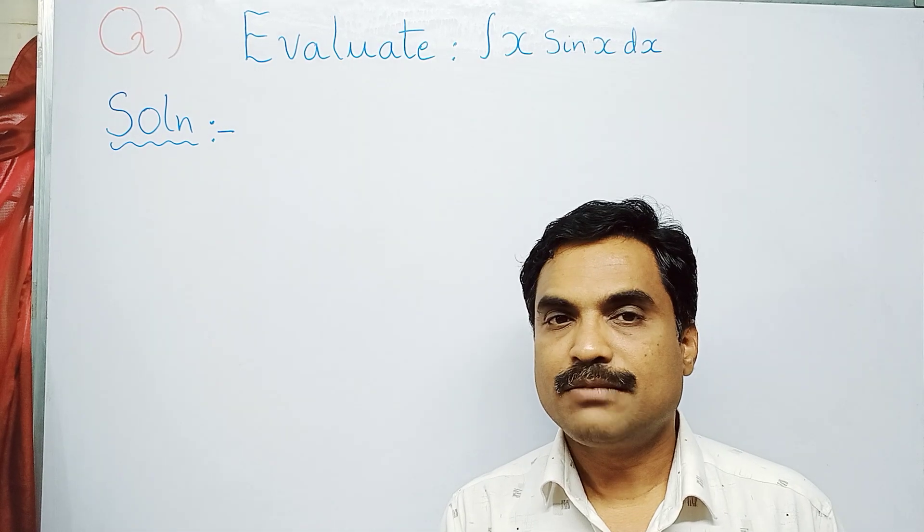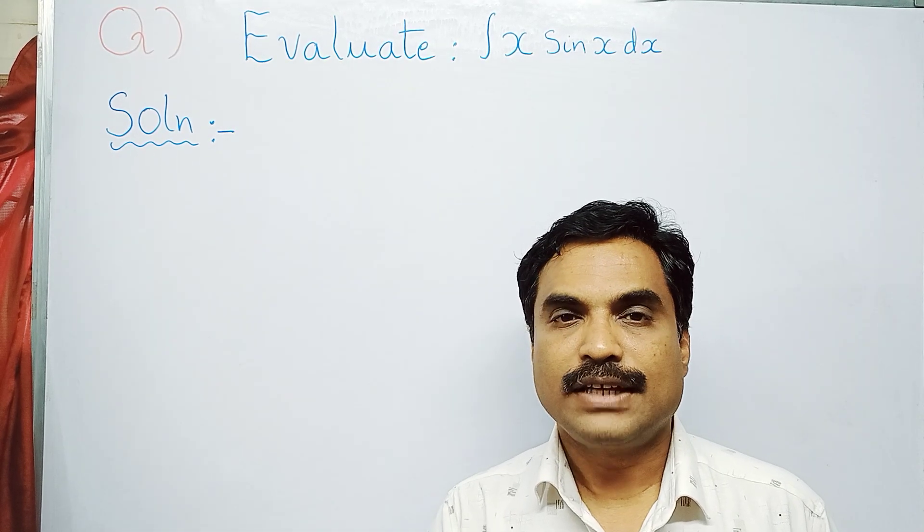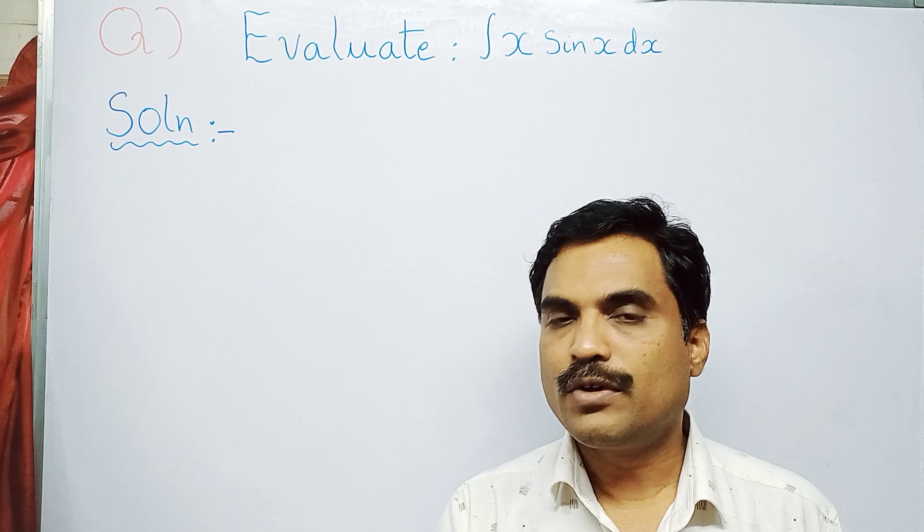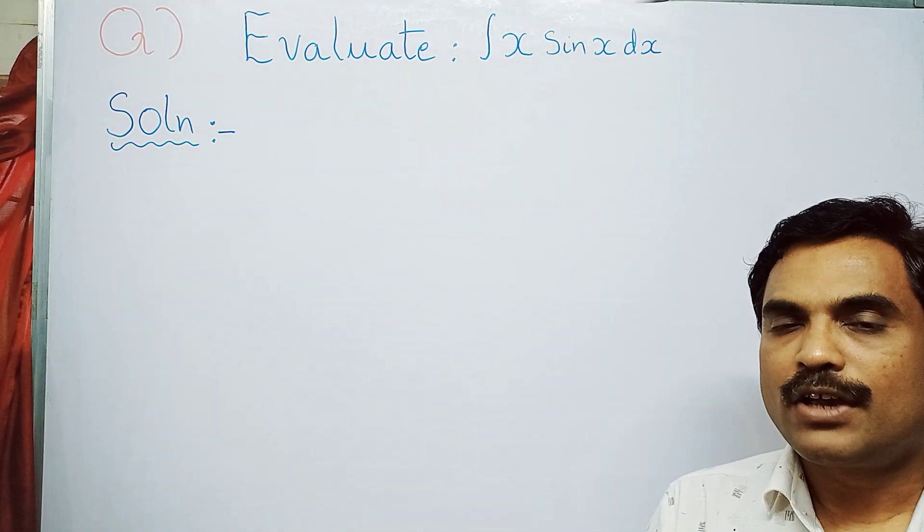The integration by parts formula is: integral u dv equals u v minus integral v du. Here you can make a choice by using the term ILATE.